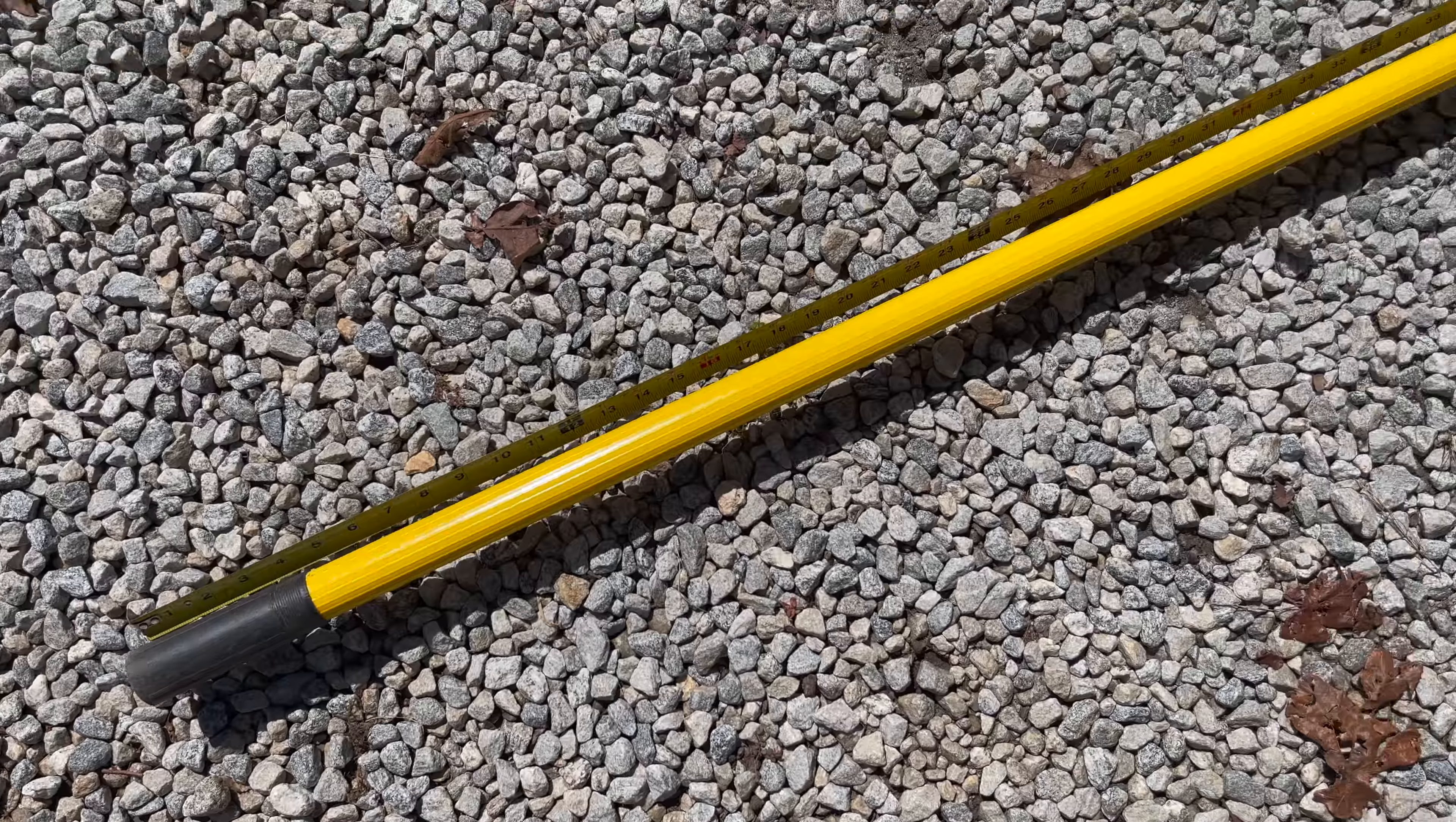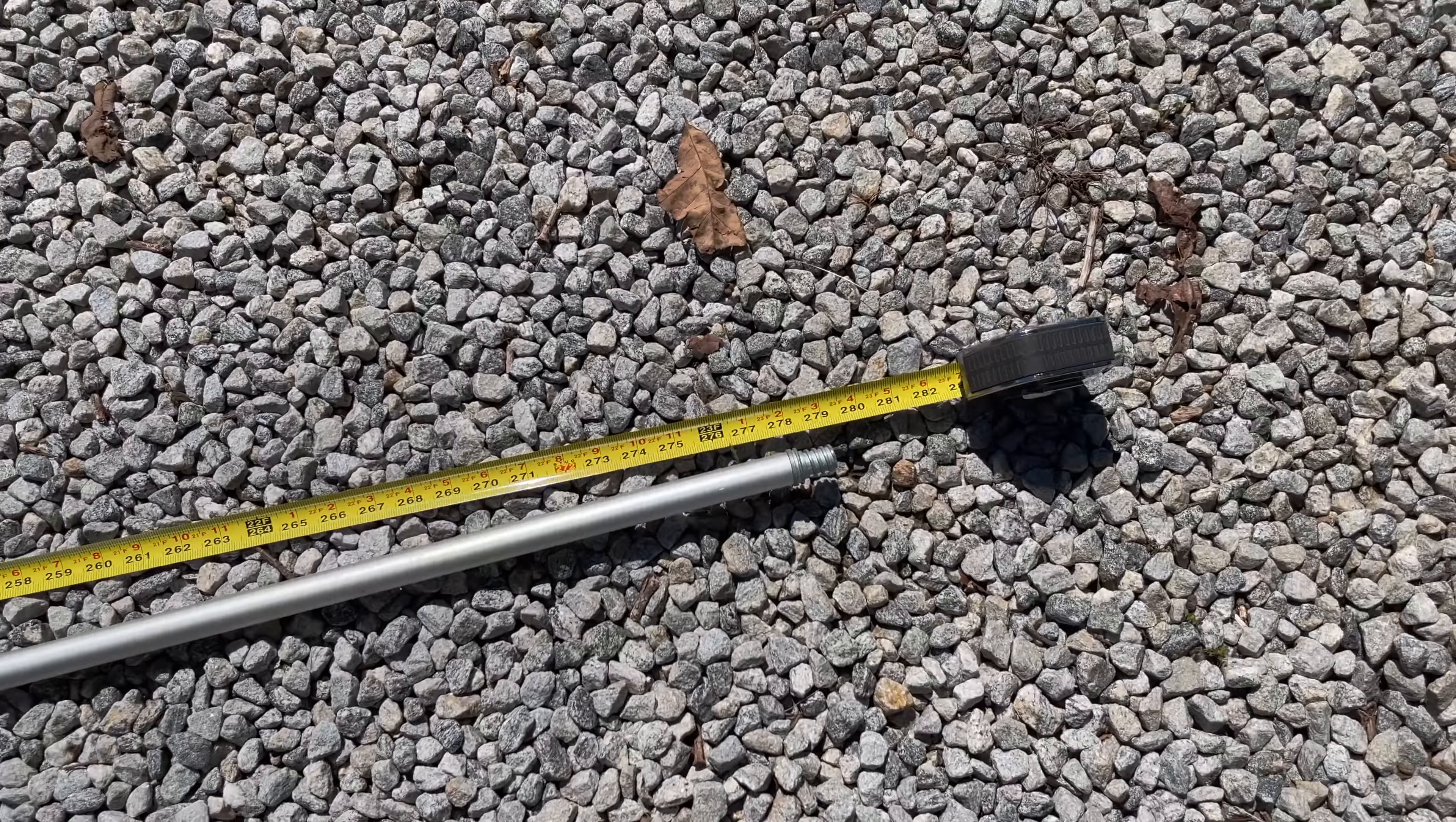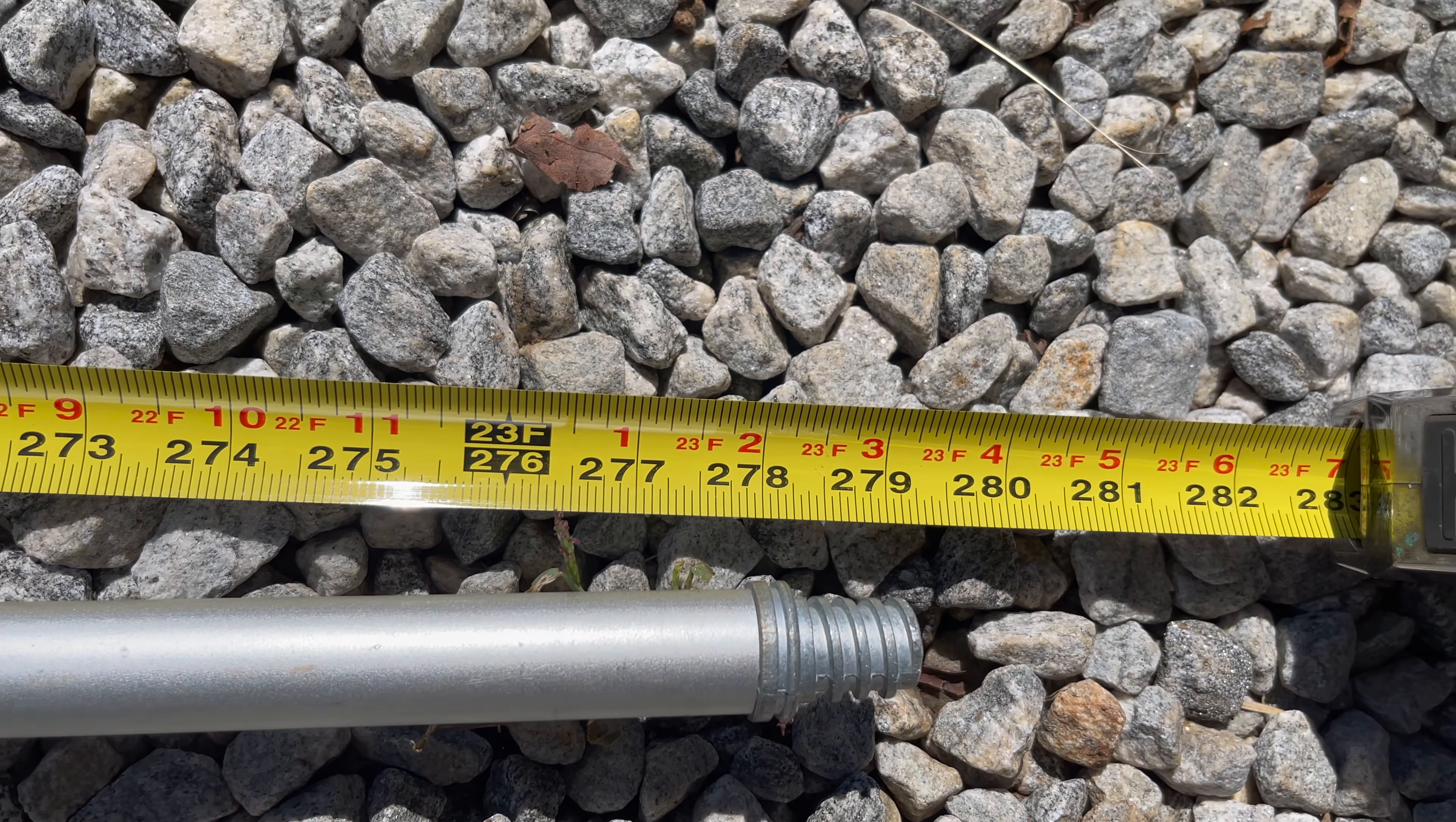We're measuring the length of this extension pole. It's supposed to be a 23-foot pole. It's fully extended. It is one, two, three, about three inches longer than 23 feet. Pretty close though.